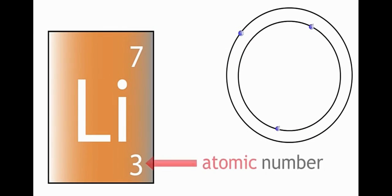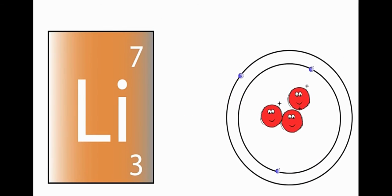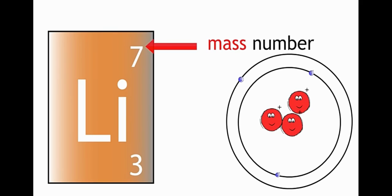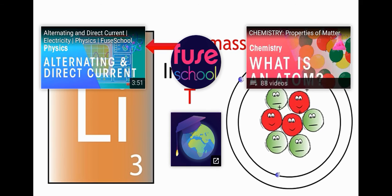So the atomic number is the number of protons in an atom, and the mass number is the number of protons and neutrons in an atom.